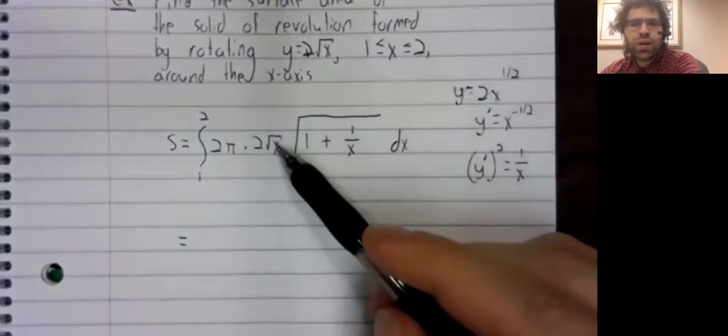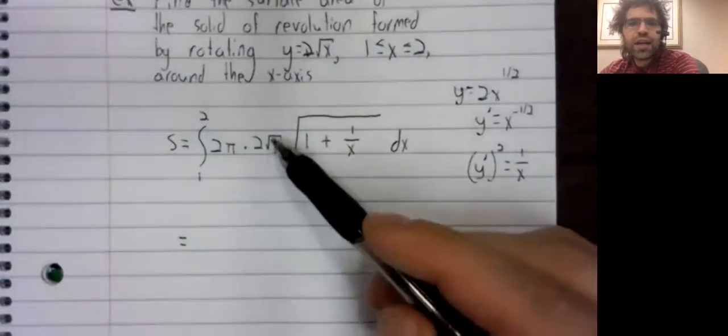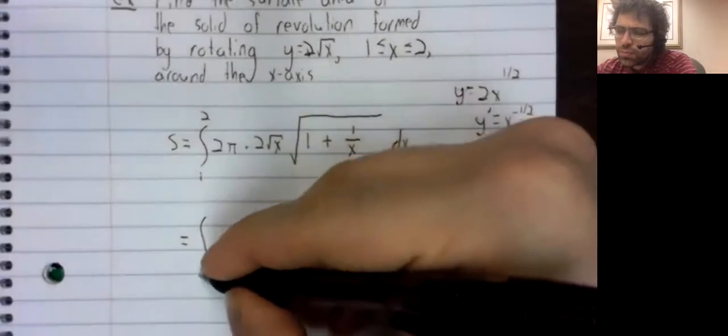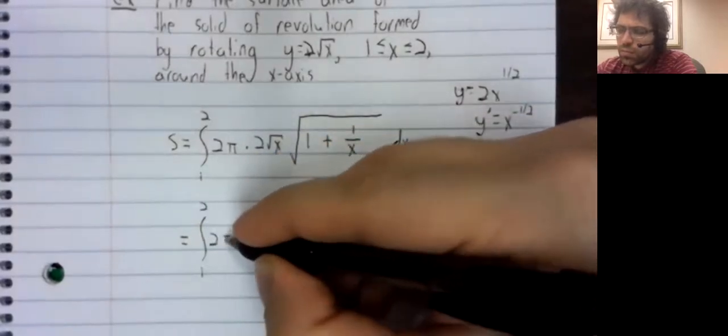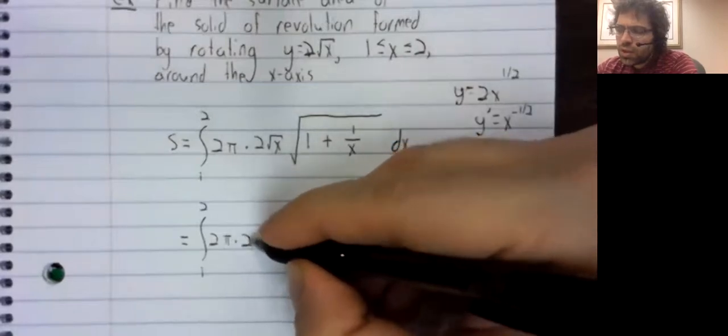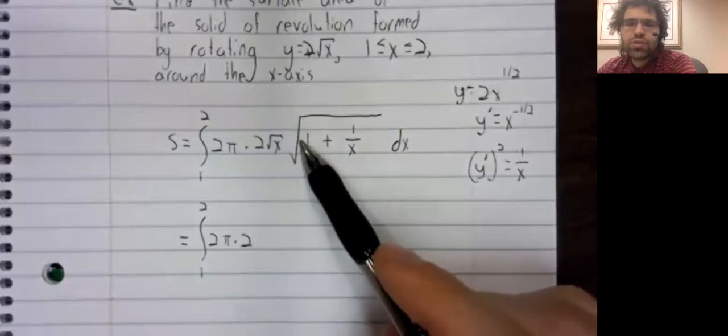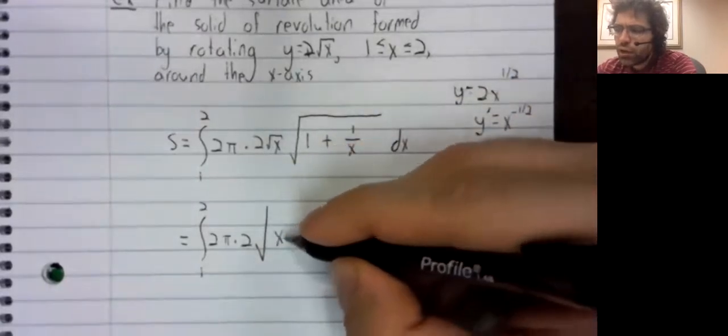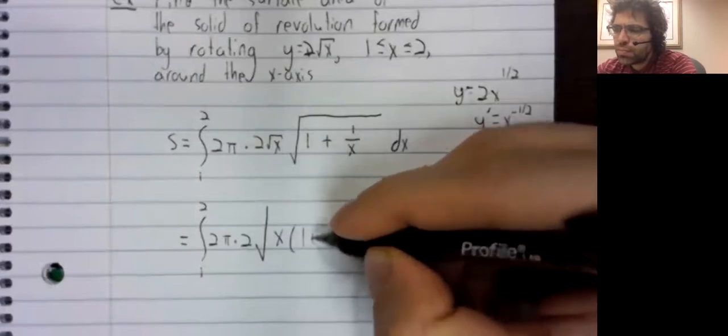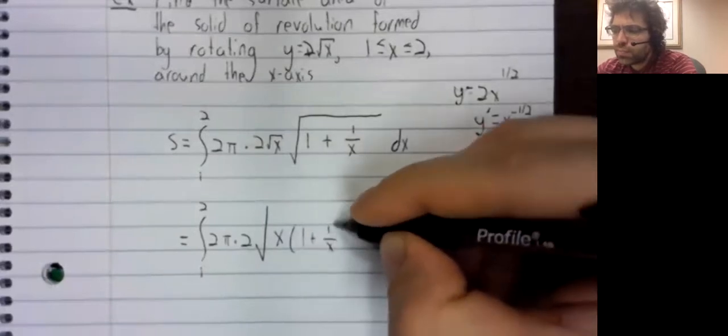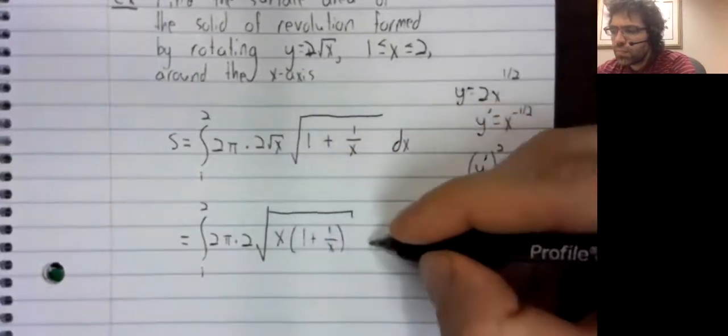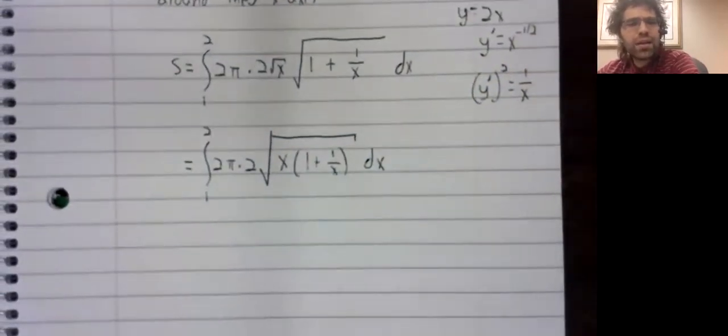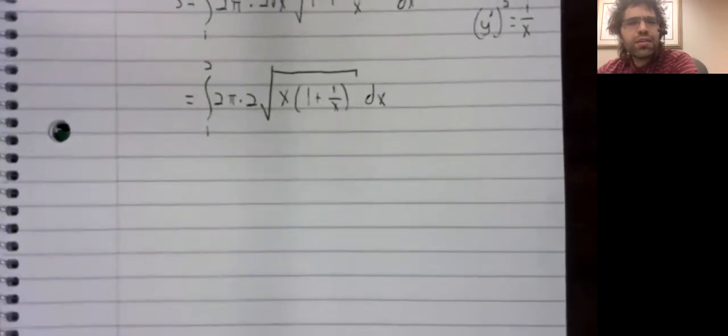Maybe we can try to do something with the fact that we have two square roots. That is to say, a square root times a square root can be written as a single square root. But does that help anything? Well, as a matter of fact, it does.